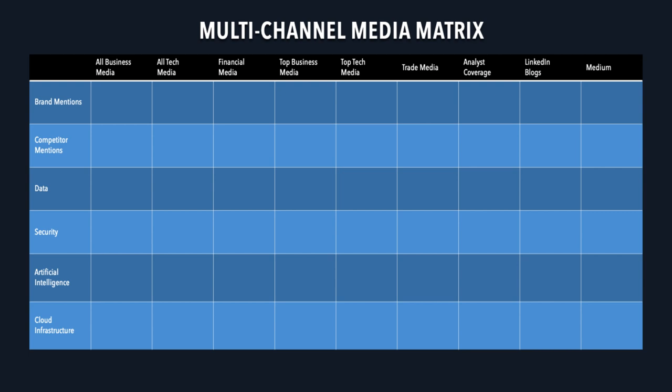I'm not going to tell you to measure share of coverage — it might be a data point on a slide somewhere, but what you need to do is analyze the context and the narratives of each media channel. The way business media covers your brand is different than the way tech media does. When you decrease that data set from all to just the top business media — going from maybe 300 publications to just 10 or 25 — your mind will be blown at how each channel contextualizes your brand, competitors, and the topics that are important to you. You need to be spending more time understanding how you can align your narrative to what's relevant in the marketplace.